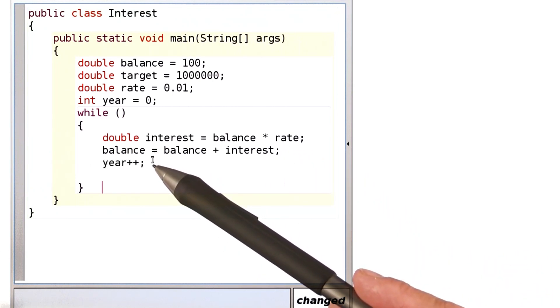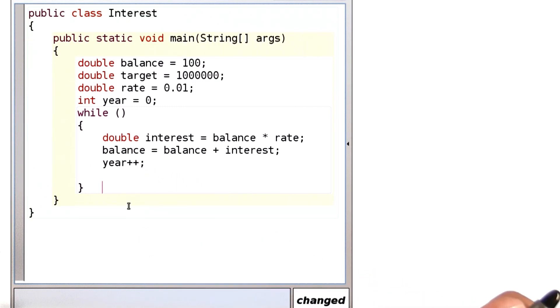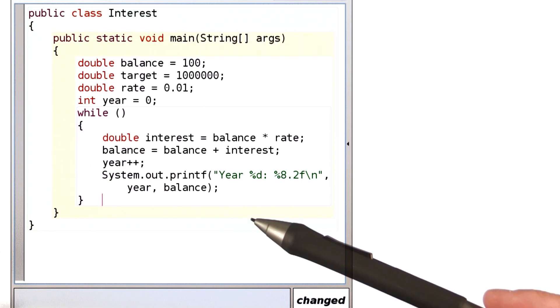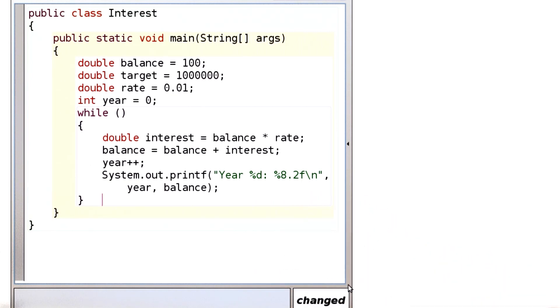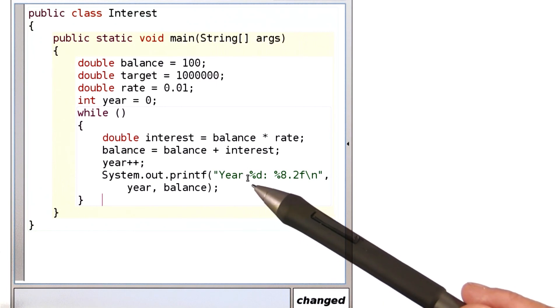Each time we do that, we also want to increment the year, because after all, we wanted to keep track of how many years this process takes. And finally, we want to print out just so that we have a running total of the current year and the current balance, which is what you see here.